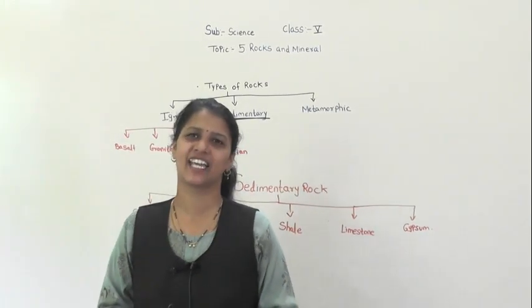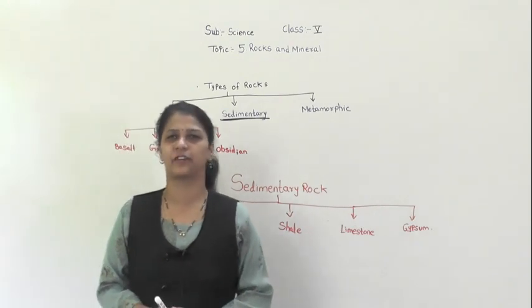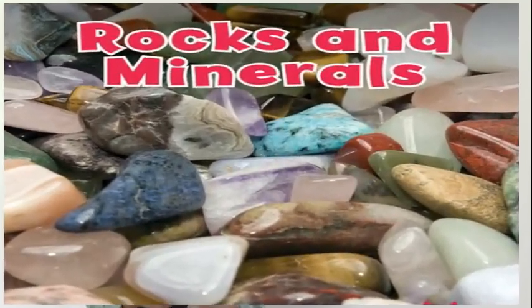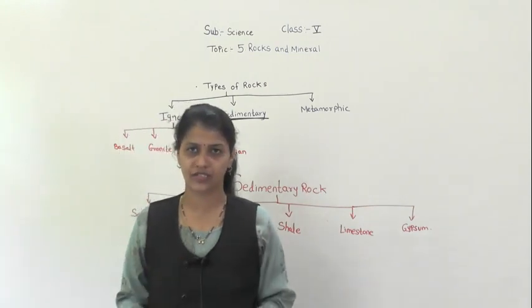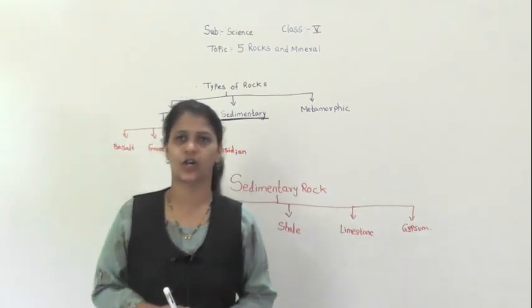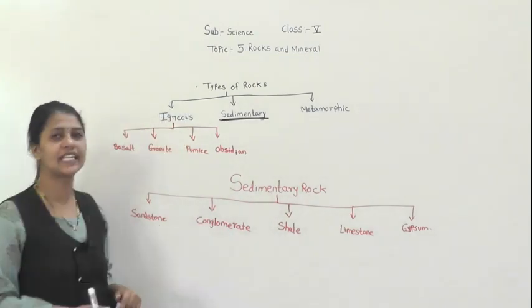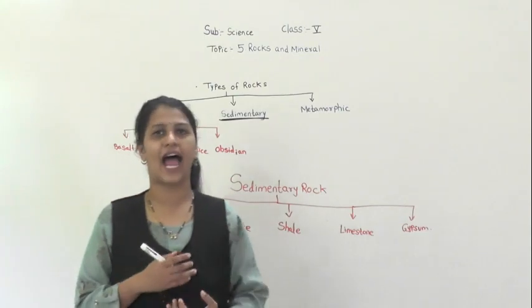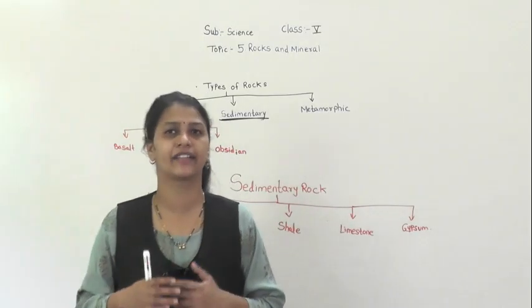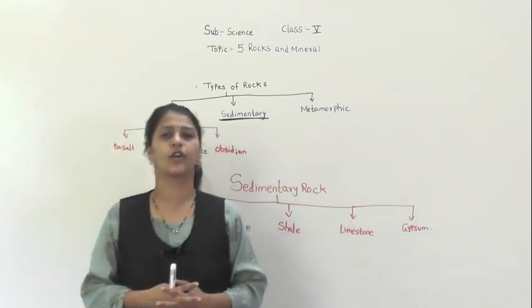Hello dear students, good morning. We are back with our Science class. We have already started the lesson on rocks and minerals. In the last video, we discussed what rocks are and where they are found. There are mainly three types of rocks: igneous, sedimentary, and metamorphic. We discussed igneous rocks — how they are formed — and their four main types: basalt, granite, pumice, and obsidian.